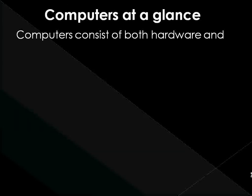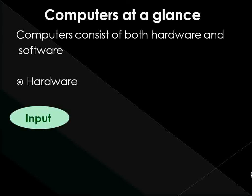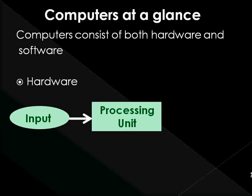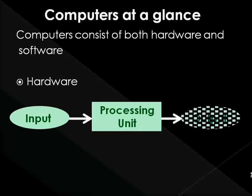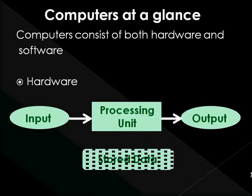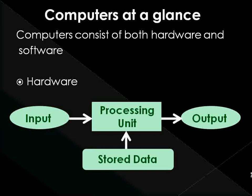Computers at a glance. Hardware refers to the physical or tangible parts of the computer. They usually consist of input devices to accept information to be processed, a processing unit to process information, output devices to display and print processed information or take necessary actions, and storage devices to store important information, as shown in the figure.